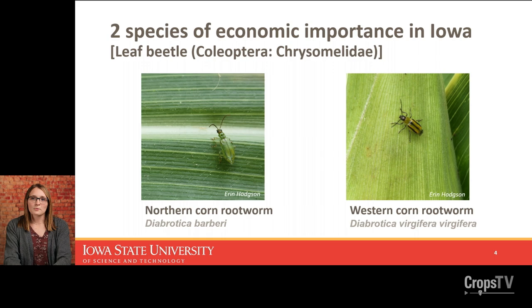And then we have the western corn rootworm, which is probably familiar to most people who grow corn in Iowa. This is the one that has a yellow body with black stripes that can sometimes overlap and look like a smudge.